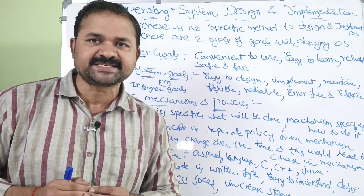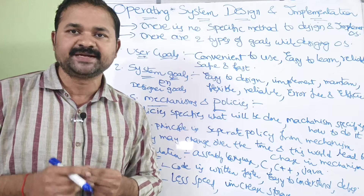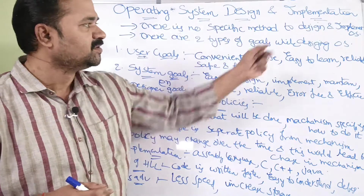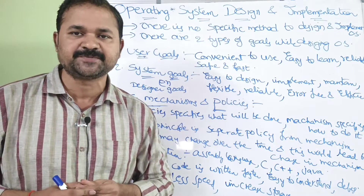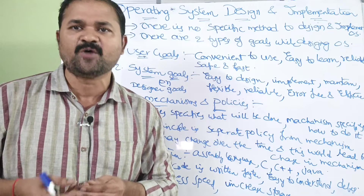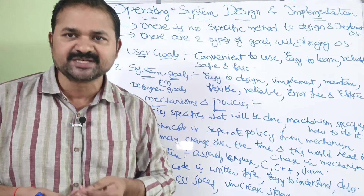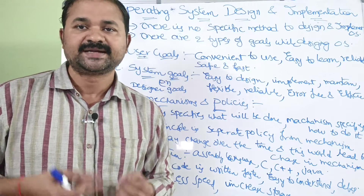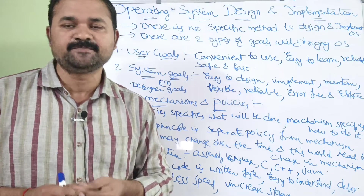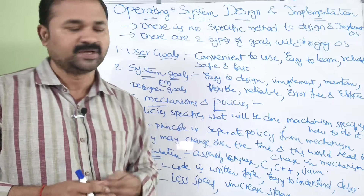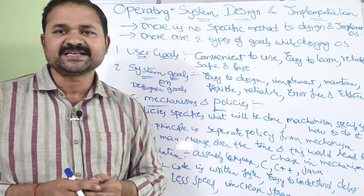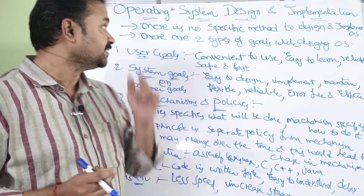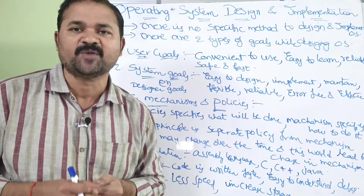Let us discuss about operating system design and implementation. There is no special method to design and implement the operating system. We have different types of operating systems like single user system, multi user system, multi programming system, time shared system, and batch system. For each operating system, the design will be different as well as the implementation will be different. So we can say that there is no special method in order to design and implement the operating system.